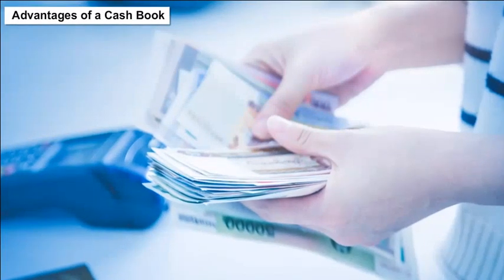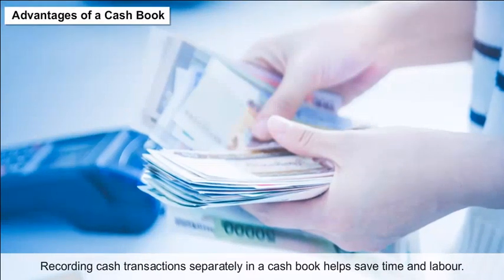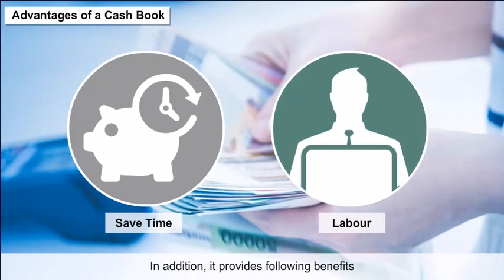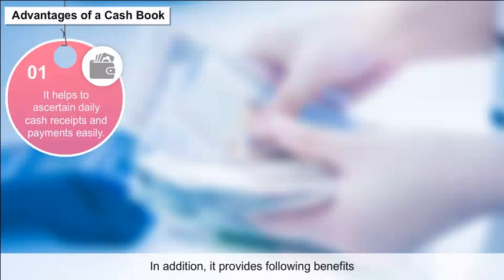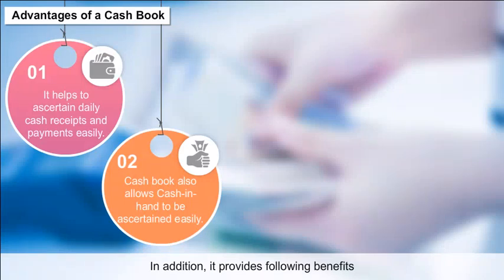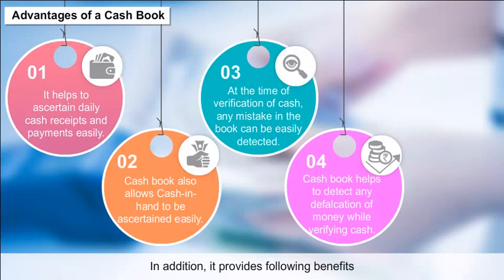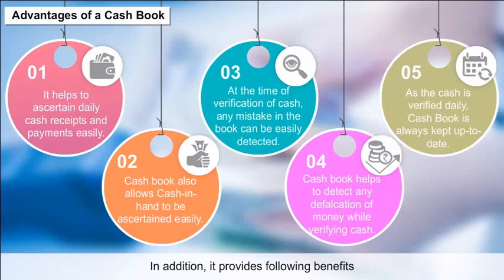Advantages of a Cash Book: Recording cash transactions separately in a cash book helps save time and labor. It helps to ascertain daily cash receipts and payments easily. Cash book also allows cash in hand to be ascertained easily. At the time of verification of cash, any mistake in the book can be easily detected. Cash book helps to detect any defalcation of money while verifying cash. As the cash is verified daily, the cash book is always kept up to date.